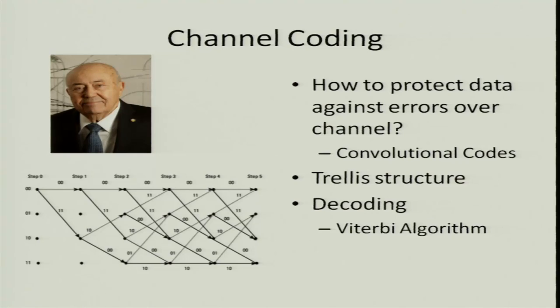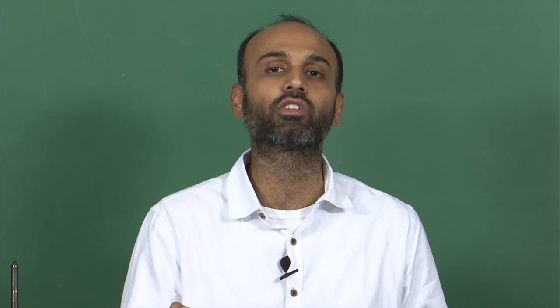That leads to convolutional codes, channel coding, and the decoding which can be done employing the trellis decoder, thanks to the work of Viterbi — the celebrated Viterbi algorithm for efficient decoding of coded communication signals at the receiver — which makes reliable and efficient communication possible in virtually all modern digital communication systems, including digital telephony, set-top boxes, 3G, 4G, 5G wireless telephony systems, Wi-Fi, and many other modern communication systems based on digital transmission of information.